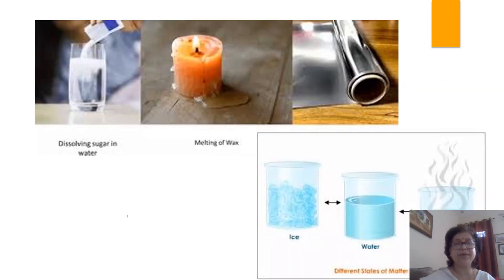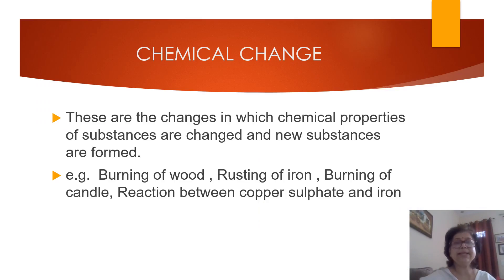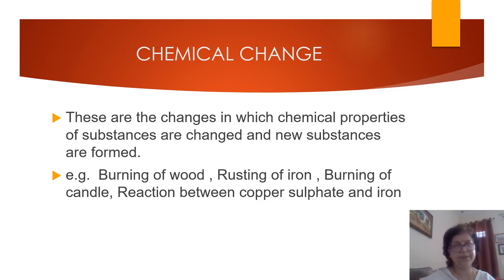Diagrams are also shown here. Chemical changes: these are changes in which chemical properties of substances are changed and new substances are formed. In a chemical change, chemical properties change and new substances are formed. Examples are burning of wood, rusting of iron, burning of candle, and reaction between copper sulfate and iron.